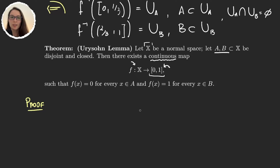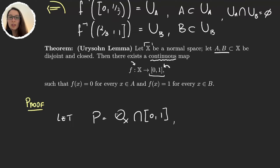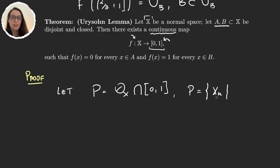Let's start giving some names. We will denote by P the set of all the rational numbers in [0,1]. Because the rational numbers are countable, P is going to be a set formed with x_n for x_n a rational number in [0,1]. We will give P some sort of order: the first element is 1 and the second element is 0. For all the rest, it can be any order we want for the rational numbers in [0,1].